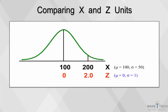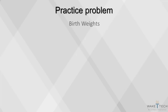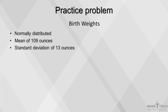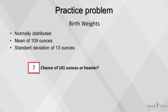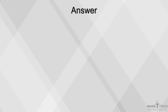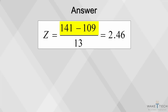This diagram illustrates the conversion of x values into z values when we convert a normal distribution to a standard normal distribution. Here's a practice problem: if birth weights in a population are normally distributed with a mean of 109 ounces and a standard deviation of 13 ounces, what is the chance of obtaining a birth weight of 141 ounces or heavier? We subtract 109 from 141 and divide by the standard deviation 13, so z equals 2.46.